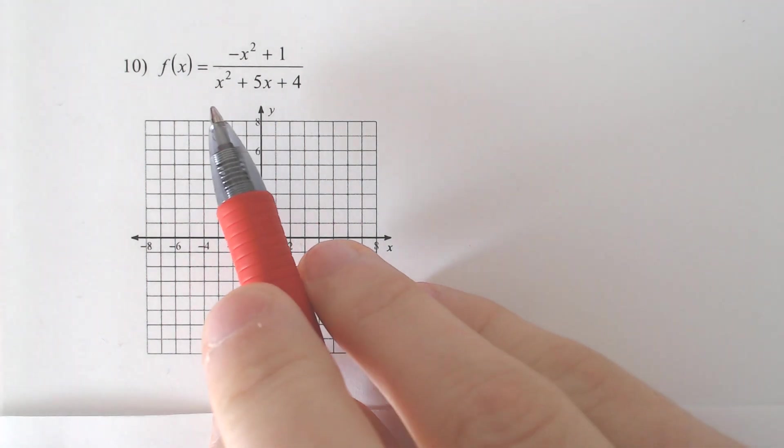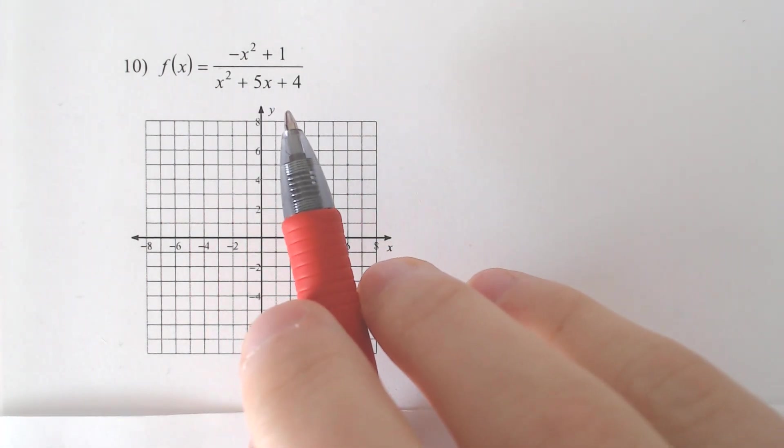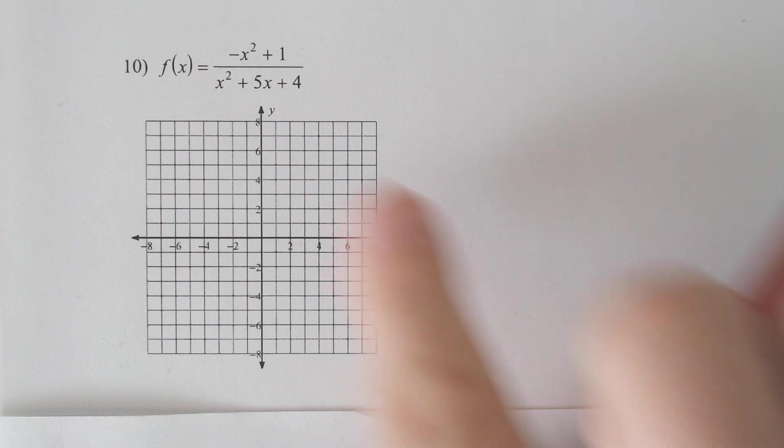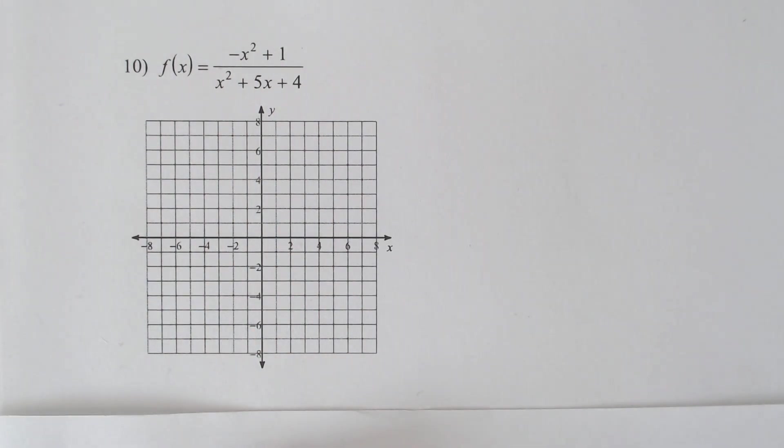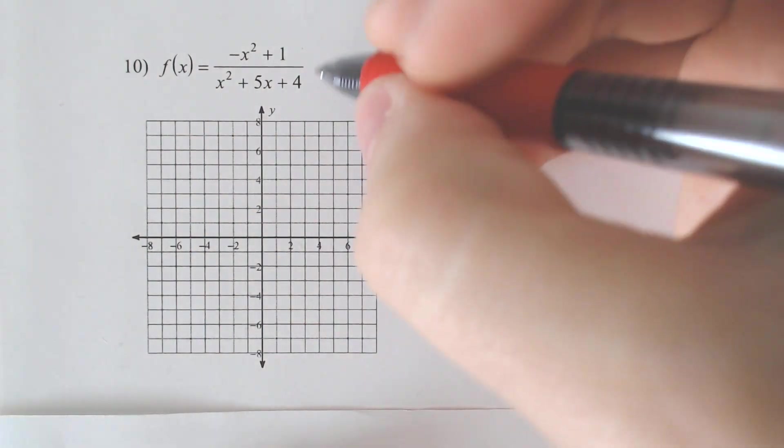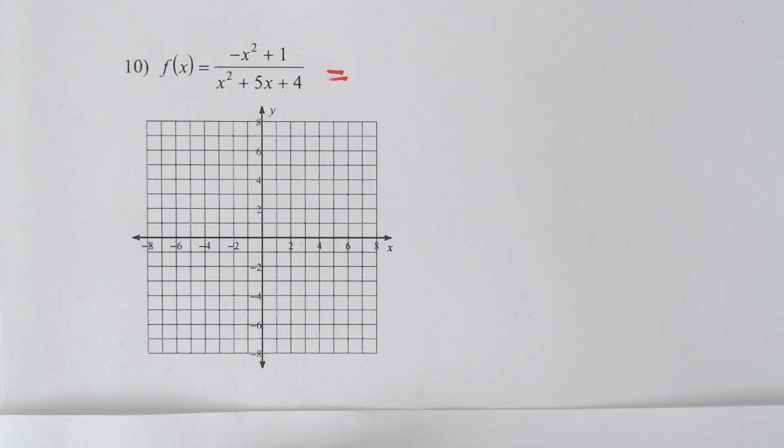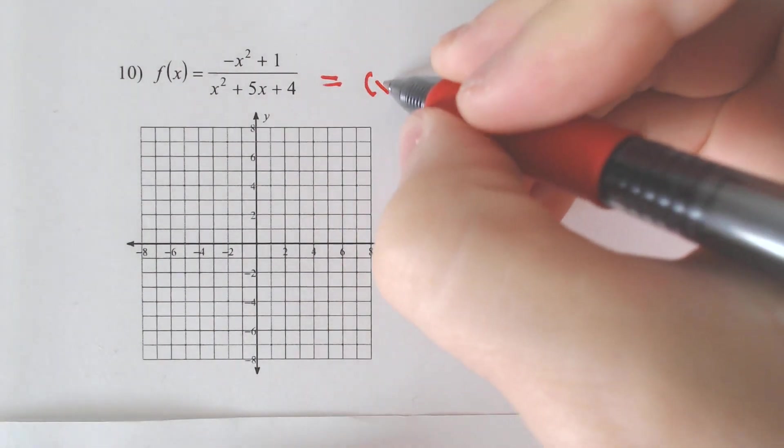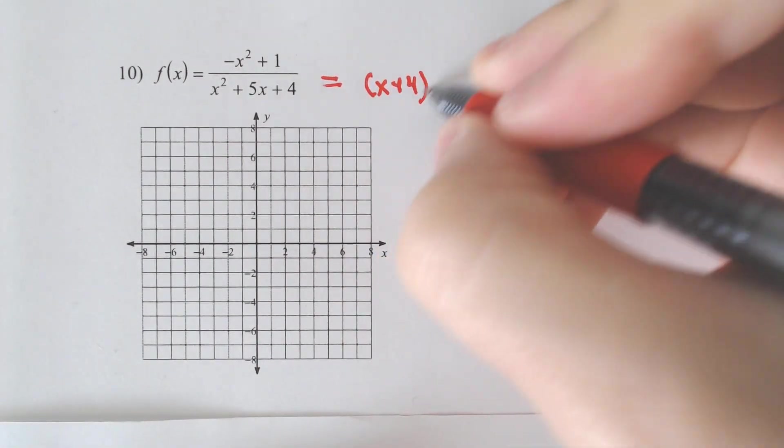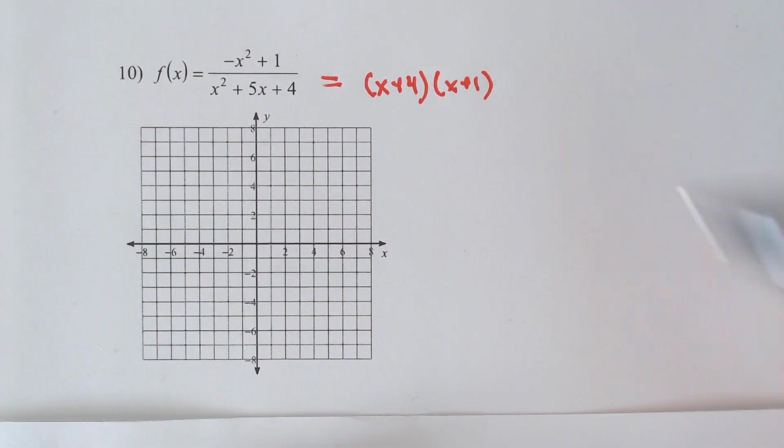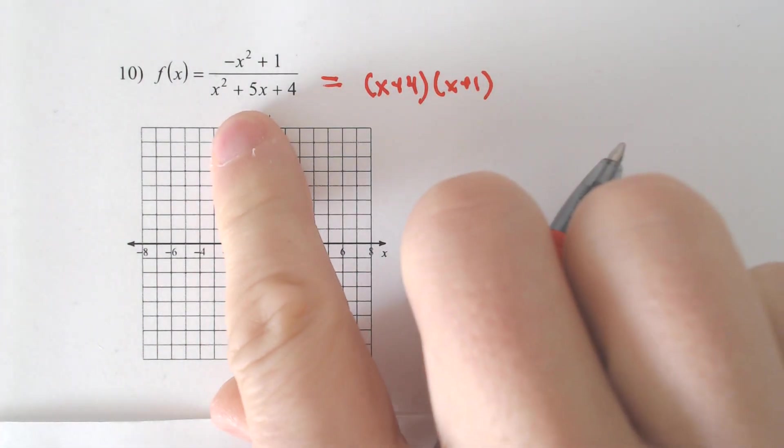In order to figure out the holes or points of discontinuity, you first typically have to factor the expression. So if we did that, the bottom of this fraction would become x plus 4 and x plus 1, because that multiplies to 4 and adds to 5.